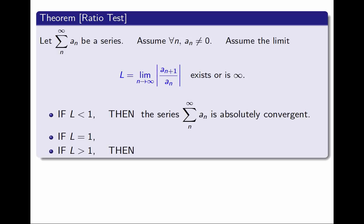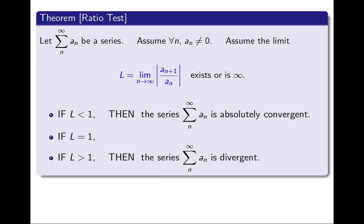In the other end, when the limit is greater than 1, remember this is the quotient of one term by the previous one in absolute value. If this limit is greater than 1, it means that in absolute value, the terms are not getting smaller, they're getting bigger, so they can't possibly be convergent to zero. And if the terms I am adding do not converge to zero, then the series must be divergent.